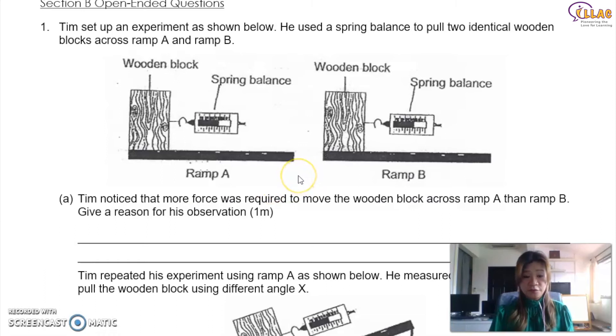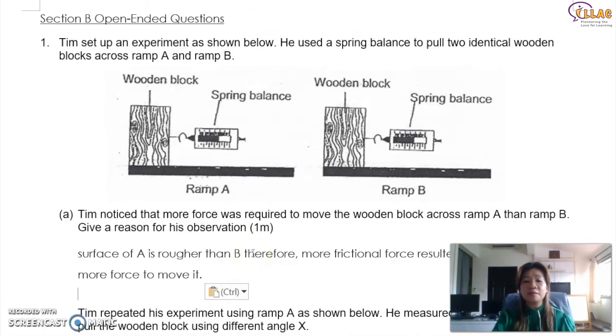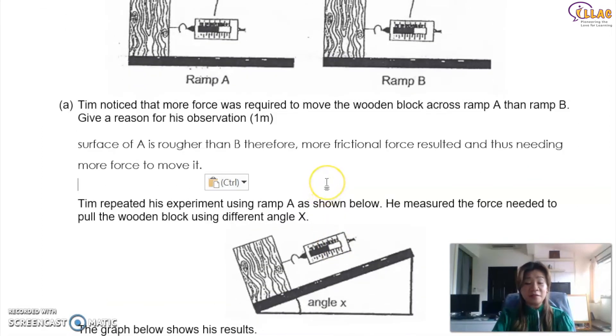Tim set up an experiment as shown below. He used the spring balance. So this is the elastic spring force that we're talking about inside here. So he used the spring balance to pull two identical wooden blocks across ram A and B. So Tim noticed that more force was required to move the wooden block across ram A than ram B. So give a reason for his observation. So now you're supposed to think, both of them look exactly the same. What could be acting on them? So you remember what are the force questions? Because they actually mentioned more force. So this is a clue to tell you, this is a force question. So what must I think about forces? What are the kind of forces that I've learned? Gravitational force, friction. Oh, friction. So could friction be the answer then? Yes. So frictional force is actually affecting it.